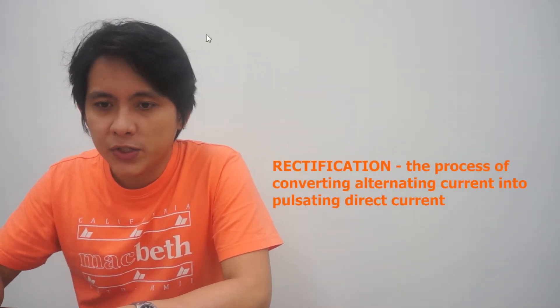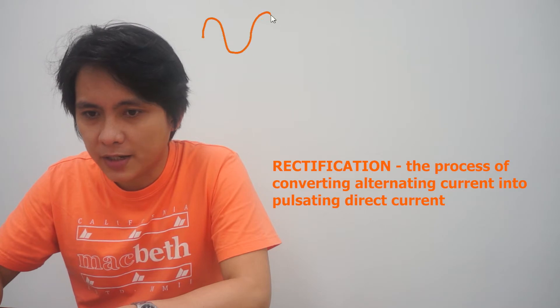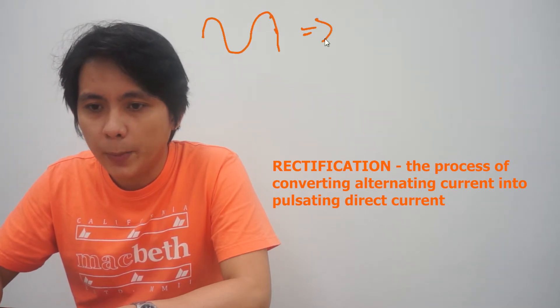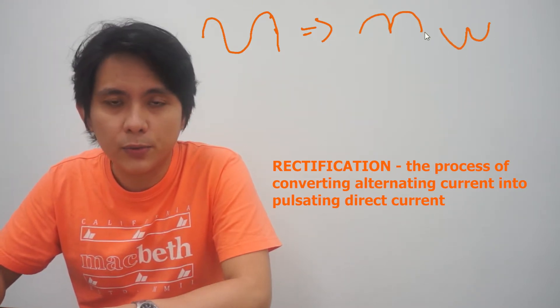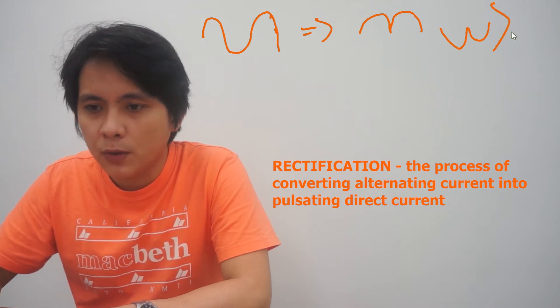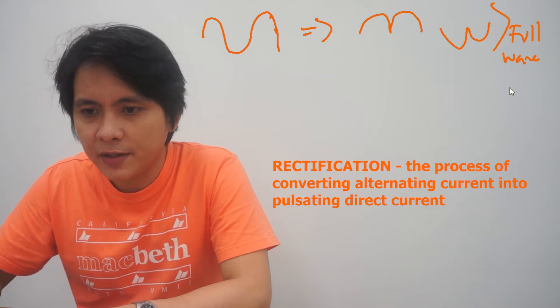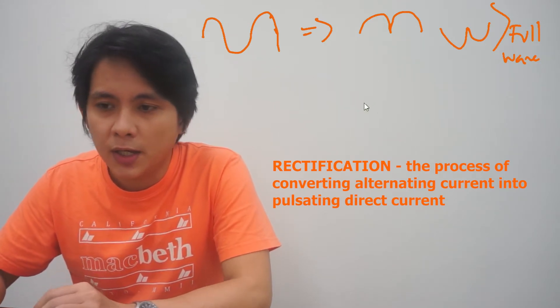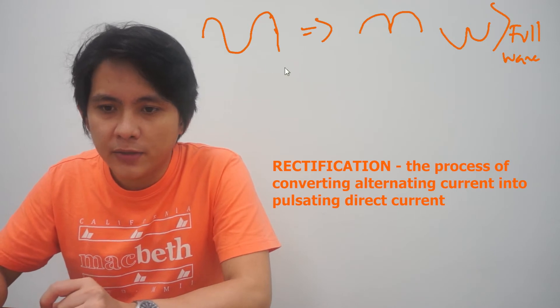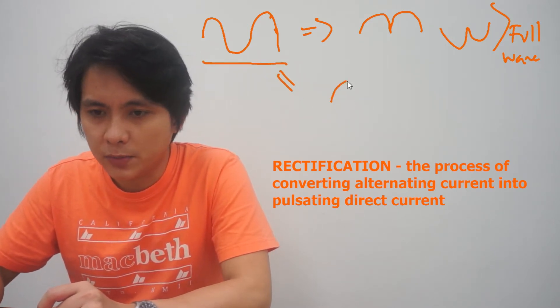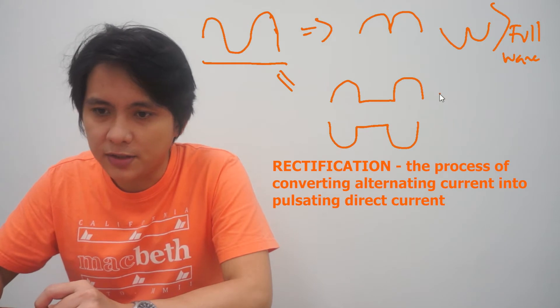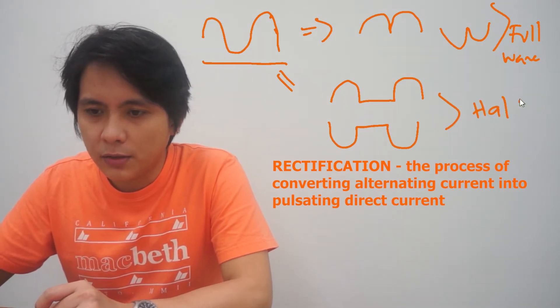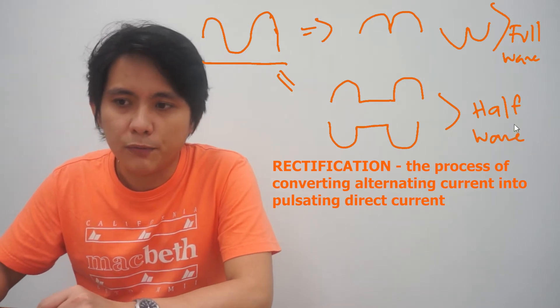Rectification is a process of converting an AC signal, which has a signal wave something like this, into a pulsating DC. It could be all positive or all negative, and this is done through a full wave rectifier. If we use a half wave rectifier, this AC signal will turn into something like this or on the negative side. This is done through half wave rectification.